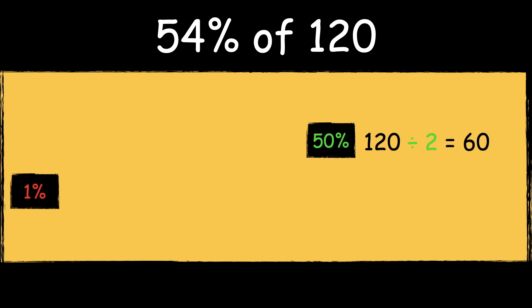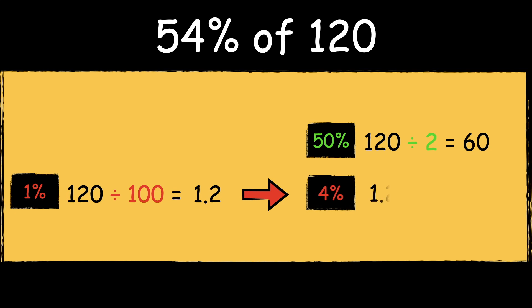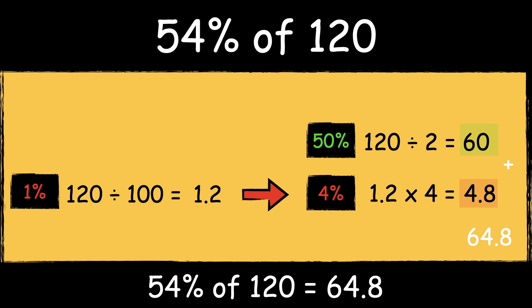Now we need to find 1% of 120. To find 1% of a number we divide it by 100. 120 divided by 100 is 1.2. We can then multiply the answer by 4 to find 4%. 1.2 times 4 is 4.8. Now that we have found 50% of 120 and 4% of 120, we add the answers together to find 54%. 60 add 4.8 is 64.8, so 54% of 120 is 64.8.